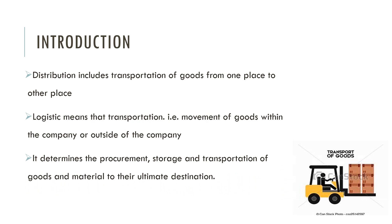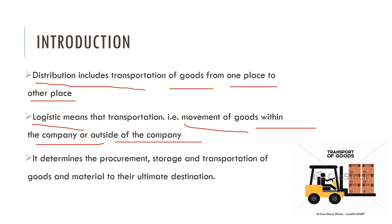First we'll see the introduction. So logistic management — as you know, distribution includes the transportation of goods from one place to another. Distribution means you are going to transport the goods from producer to consumer, or producer to wholesaler, wholesaler to retailer, retailer to customers, etc. Logistic is nothing but that transportation — movement of goods within the company or outside the company. Within the company means movement from one department to another department. Outside the company means manufacturer to wholesaler, retailer, or agent, etc.